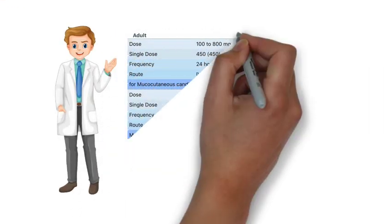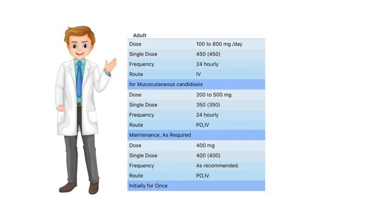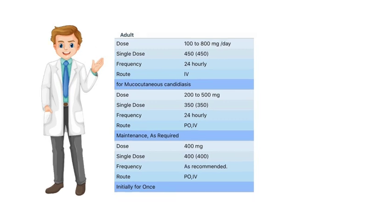Dosage: Adult dose 100 to 800 milligrams per day, single dose 450 milligrams, frequency 24 hourly, route IV. For mucocutaneous candidiasis: dose 200 to 500 milligrams, single dose 350 milligrams, frequency 24 hourly, route oral and IV. Maintenance as required: dose 400 milligrams, single dose 400 milligrams, frequency as recommended, route oral and IV, initially for once.